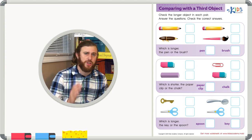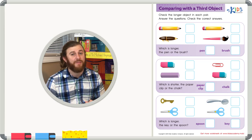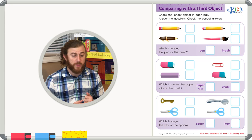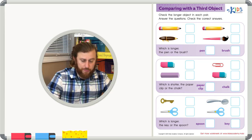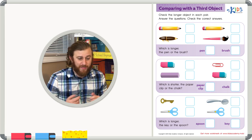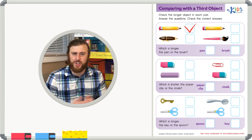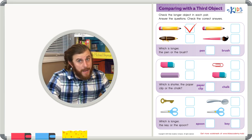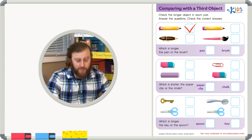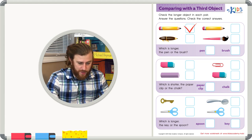First, we're just going to look at two different sets of objects and see which one's longer. After that, we'll answer some questions based on the pictures. Let's look at our first objects — we have a pen and a pencil. Which one's longer? It's pretty easy to tell the pencil is longer, so let's go ahead and check the pencil. Now let's look at our next two objects: we have that same pencil and a paintbrush. It's pretty easy to tell the paintbrush is longer, so let's check the paintbrush.